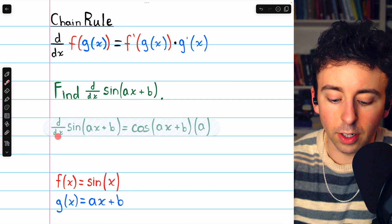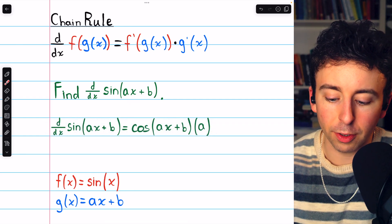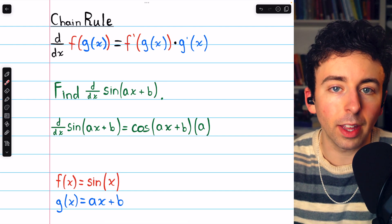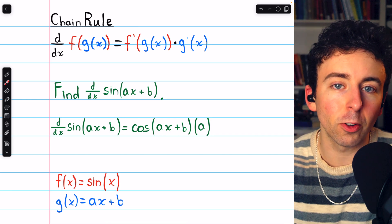So we can take the derivative. The derivative of sine of ax plus b is f'(g(x)), the derivative of the outside function, leaving the inside function unchanged.